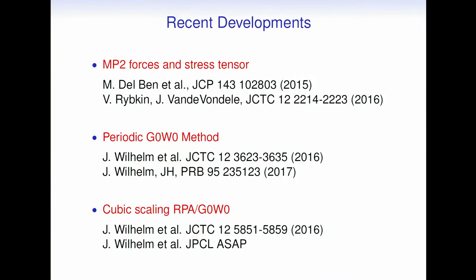This was the standard implementation done a couple of years ago, mostly by Mauro. In recent years, we have made some progress. First, we have forces and stress tensors for MP2, both restricted and unrestricted. We have also implemented GW — once you have RPA, the step to GW is not that big. This was done by Jan Wilhelm in the last couple of years. And very recently, implementations where we reduced the scaling of RPA and GW from N⁴ to N³.